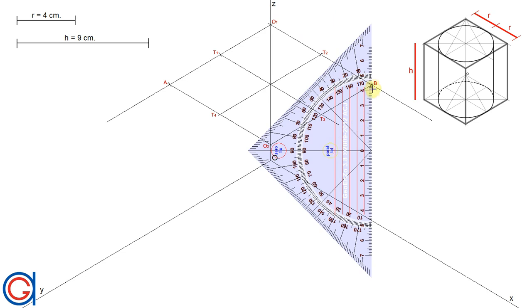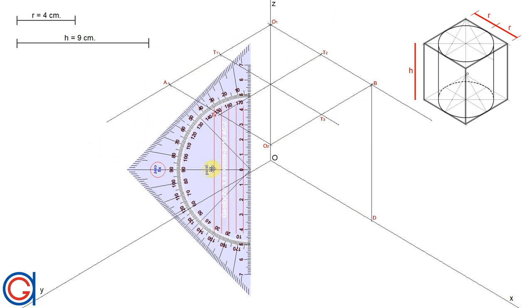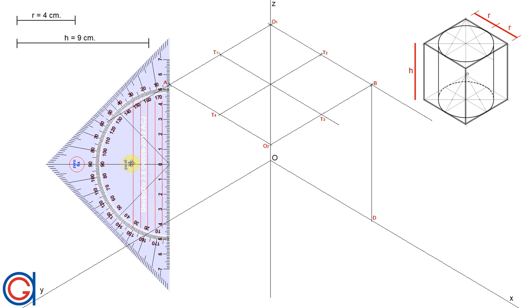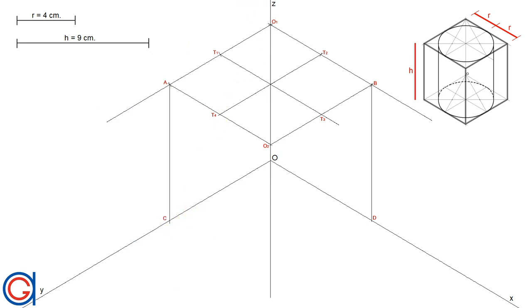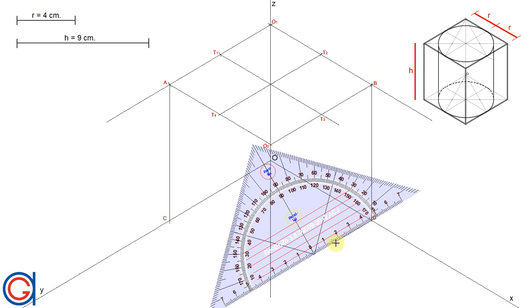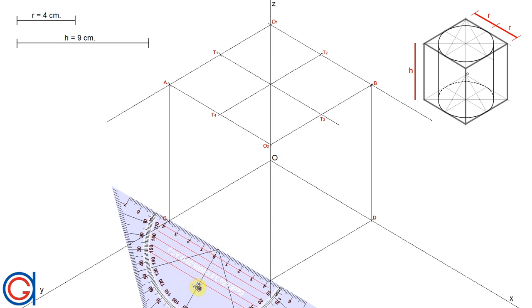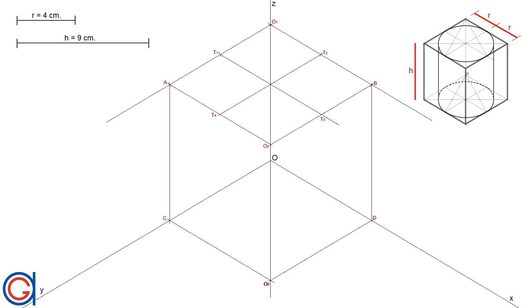Now we draw a perpendicular vertical line from point b until it cuts the x-axis at a new point which we will call d, and from point a another perpendicular vertical line until it cuts the y-axis at a new point which we will call c. To complete the box, we draw a parallel line to the y-axis from point d, and a parallel line to the x-axis from point c. Where they intersect with the z-axis we get a new point which we will call o7.